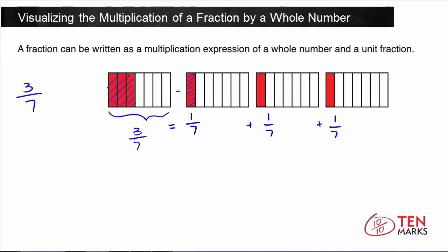What you can do now is rewrite 3/7 as a multiplication expression. So you would have 3 times the unit fraction here, which is 1/7, because there are 3 one-seventh parts, and this is equal to 3/7.